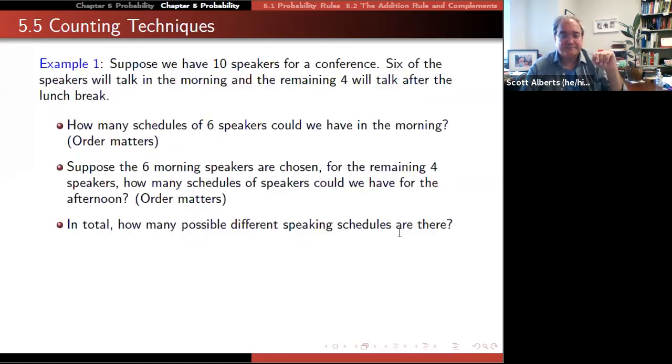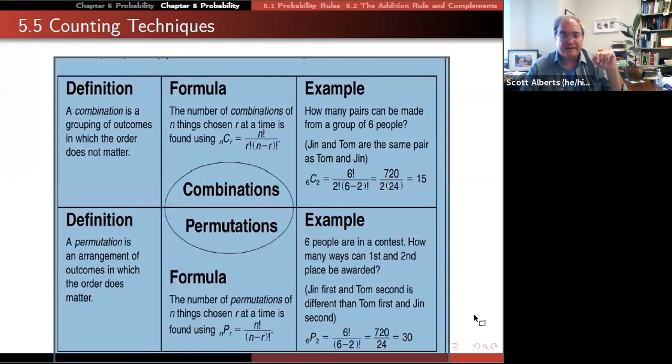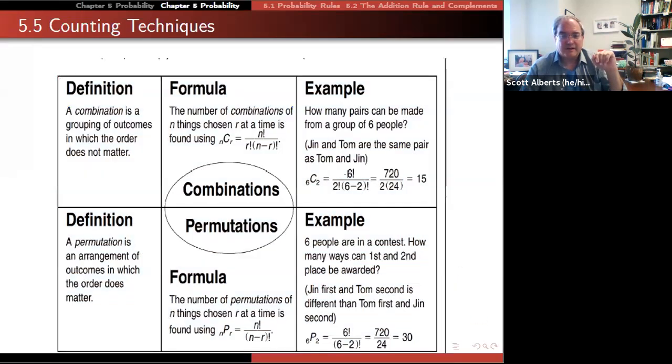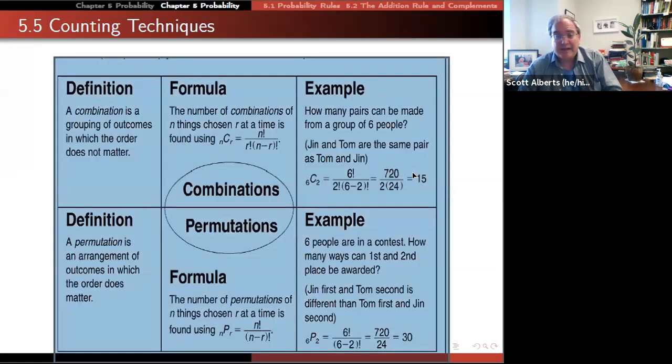This idea that there are six people and we're going to form two groups of two. Well, we can take 6 factorial, which is 720, a pretty big number. And we're going to divide that by 2 factorial times 6 minus 2, which is 4 factorial, which is 2 times 6 times 5 times 4 times 4, which is 24. And that gives us 15. So there's 15 pairs because we don't care which one is picked first and which one is picked second.